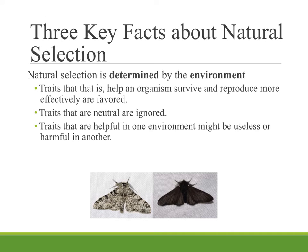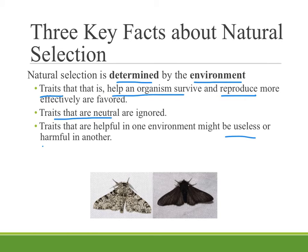There are three key facts about natural selection. First, natural selection is determined by the environment. However those abiotic and biotic factors in the environment are configured will determine which traits help an organism survive. If the organism survives, reproduces, and passes those traits to offspring, those are the traits that show up in the population. Traits that are neutral are simply carried along — neither selected for nor against. For example, humans have a trait of having six fingers and six toes that's still in the population; it just shows up every so often. Since the usefulness of traits is dependent on environmental factors, traits helpful in one environment might be useless or even harmful in another.